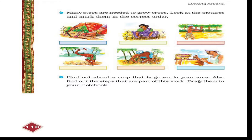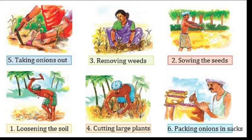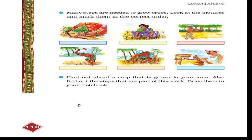You have to arrange these pictures in order, line by line. The first step is loosening the soil. The second is sowing and sprinkling seeds. The third is removing weeds. The fourth is cutting large plants. The fifth is threshing or separating the grain. The sixth step is giving water or irrigating.